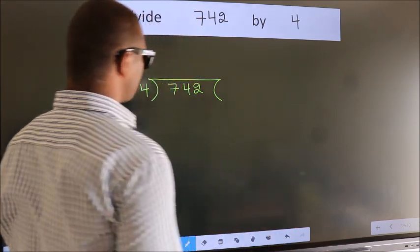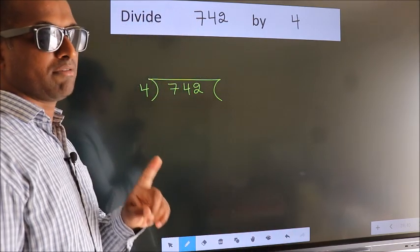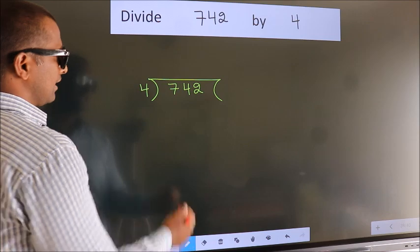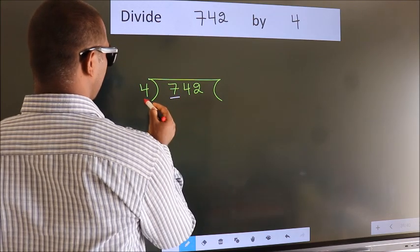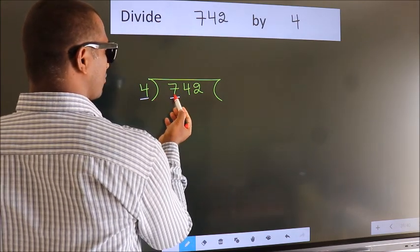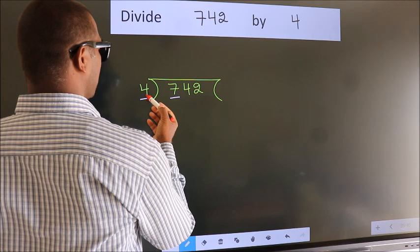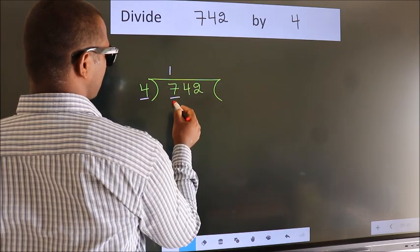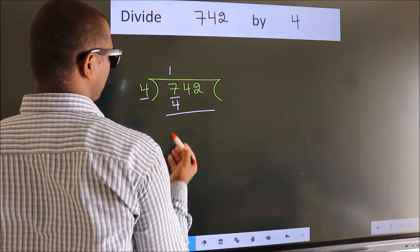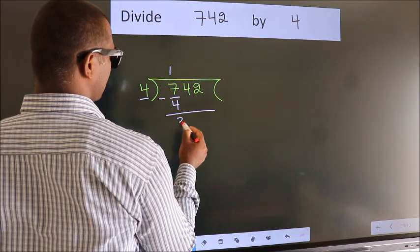This is your step 1. Next, here we have 7, here 4. A number close to 7 in 4 table is 4 once 4. Now, we should subtract. We get 3.